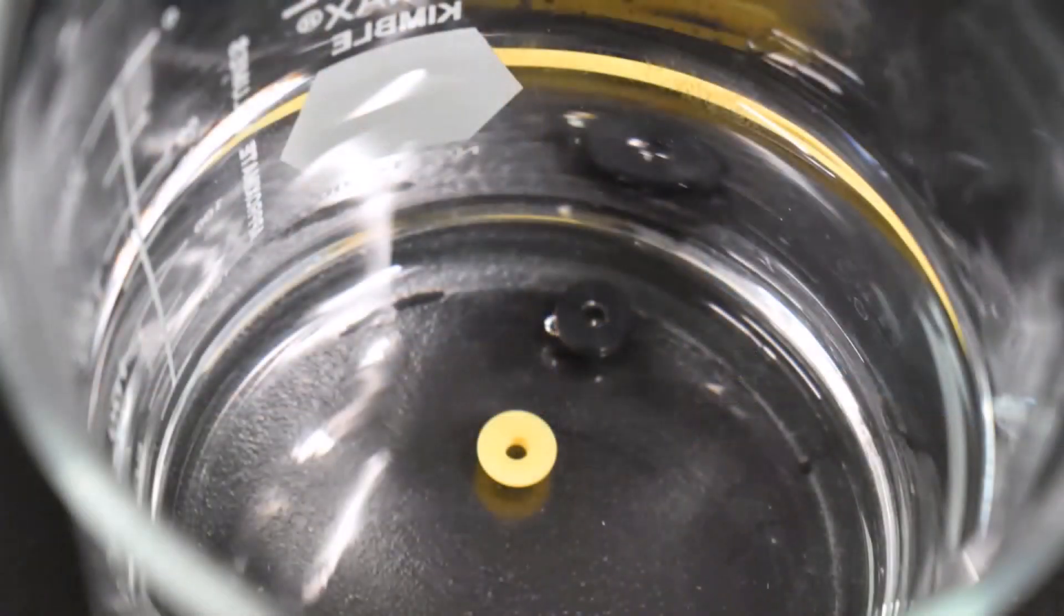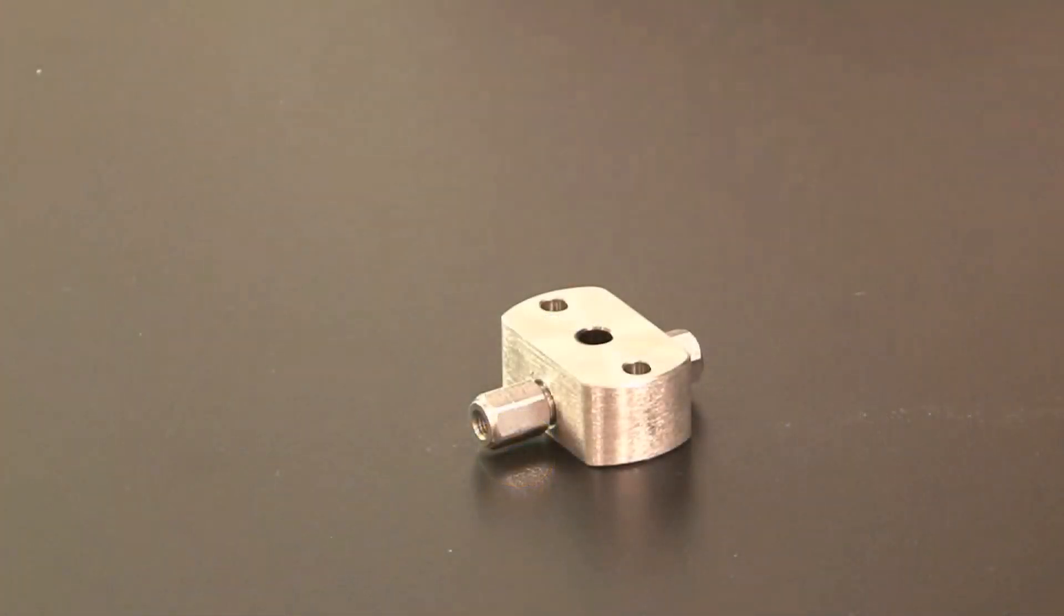Soak the seal and the backup ring in isopropanol prior to installation. Lubricate the pump head cavity with isopropanol.